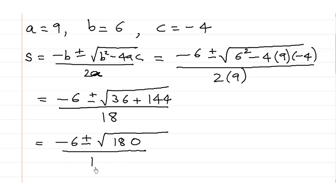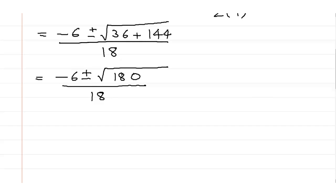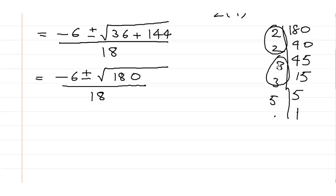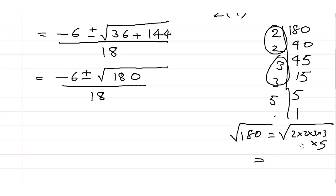We feel we are almost done, but we need to factorize 180 to see if something simplifies. So 180 = 2 × 2 × 3 × 3 × 5. Therefore √180 = √(2 × 2 × 3 × 3 × 5). Out of the two 2's, one 2 comes out; out of the two 3's, one 3 comes out; and the 5 remains inside the square root. So √180 = 6√5.